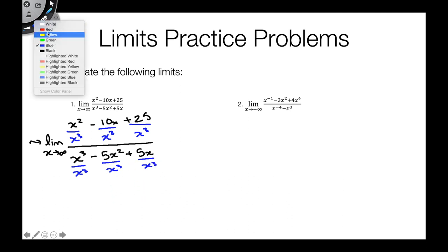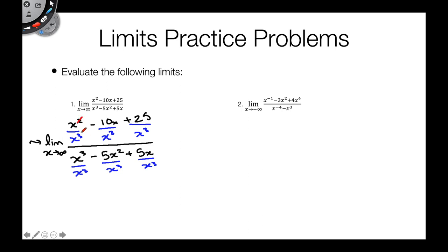Now we can do some simplifications. Two of those x's cancel out, leaving x to the first in the denominator. x squared and x cubed cancel, leaving x to the first. One of these x's cancels with one of the x's in x cubed, leaving x squared in the denominator. x cubed and x cubed cancel perfectly to 1. For 5x squared over x cubed, x squared cancels with two of the x's, leaving x to the first. And x over x cubed leaves x squared in the denominator.